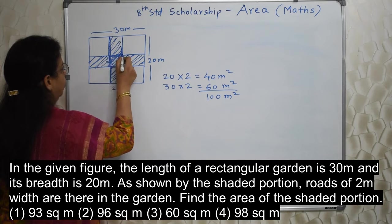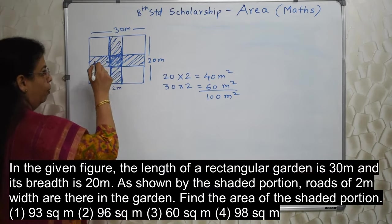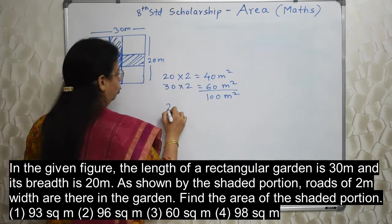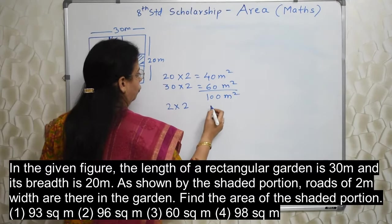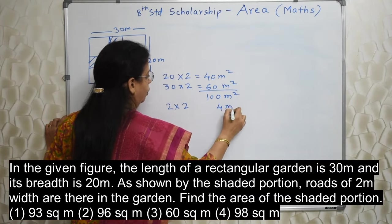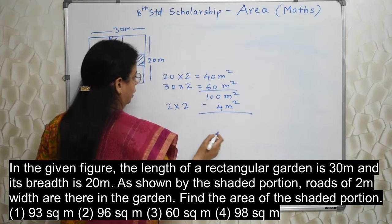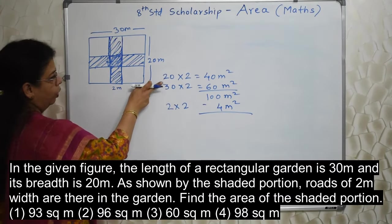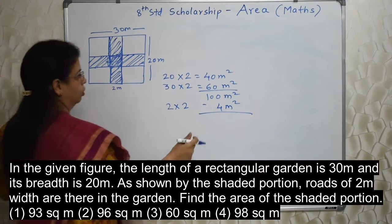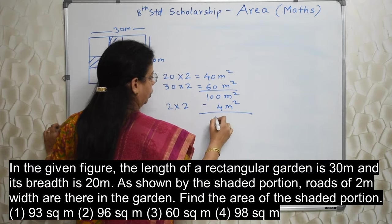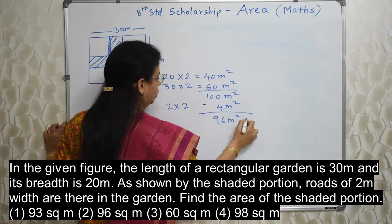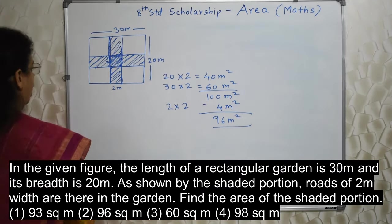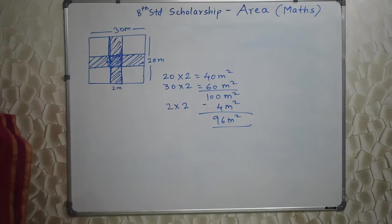So one time we need to subtract. This is 2 meter, this is also 2 meter, 2 by 2 it is. So 2 into 2, 4 meter square. We need to subtract once because that is included in both. So 96 meter square is the answer. The shaded portion has the area which is equal to 96 meter square.